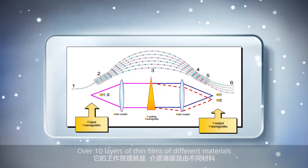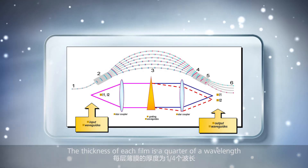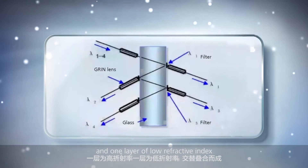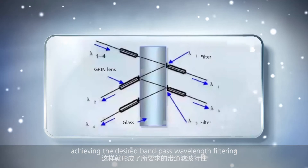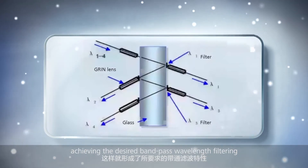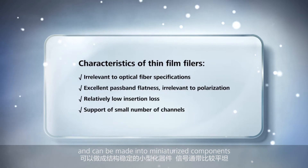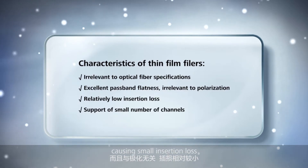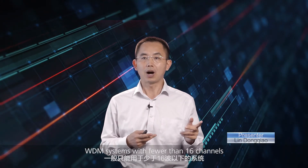Next are the TFF multiplexers and demultiplexers. Over 10 layers of thin films of different materials and with different refractive indexes are superimposed. The thickness of each film is a quarter of a wavelength, and the superimposition follows the pattern of one layer of high refractive index and one layer of low refractive index. Such a structure forms a passband for certain wavelengths and a block band for other wavelengths, achieving the desired bandpass wavelength filtering. TFF multiplexers and demultiplexers are not related to optical fiber specifications and can be made into miniaturized components with stable structures and excellent passband flatness. They are also unrelated to polarization, causing small insertion loss. TFF multiplexers and demultiplexers can only be used in WDM systems with fewer than 16 channels.